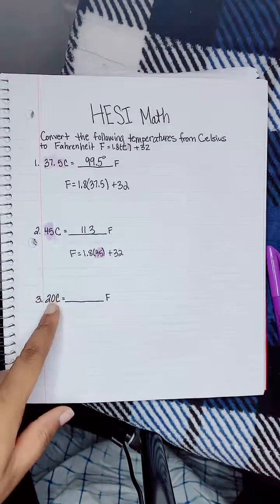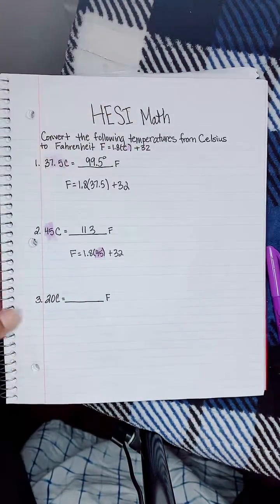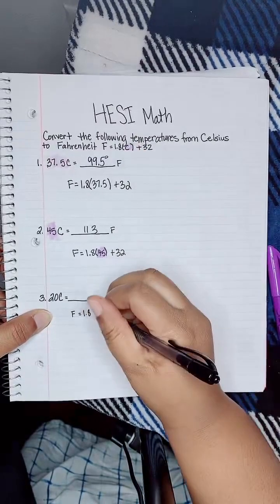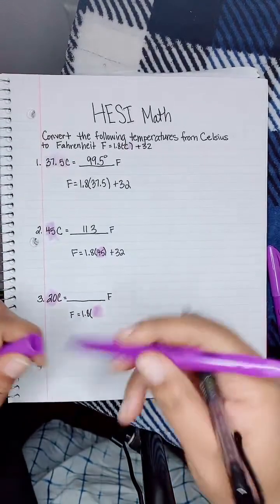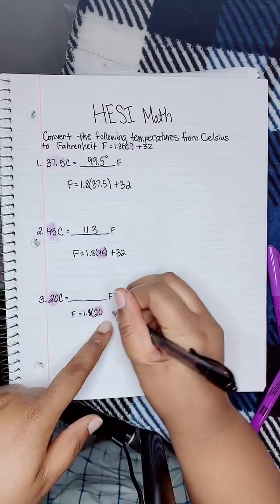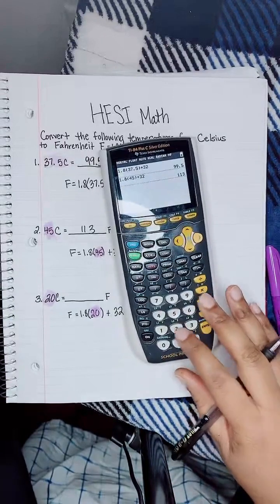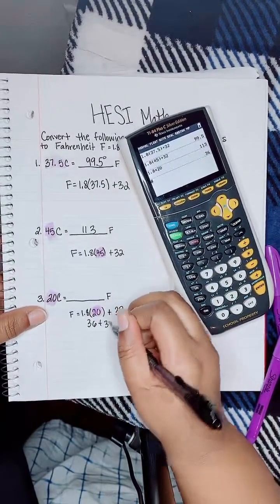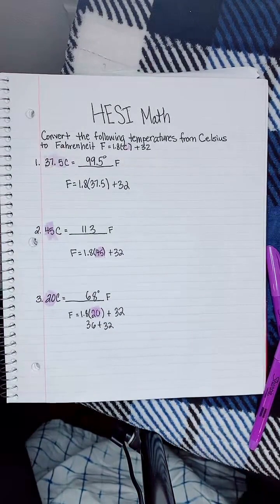We have 20 degrees Celsius and we're trying to figure out how much that is in Fahrenheit. We're going to use the formula up here: F equals 1.8, then parentheses C. Since this is 20, we put 20 in place of C, close it up, then plus 32. So we do 1.8 times 20, which gives us 36, plus 32, and we get 68 degrees Fahrenheit.